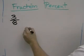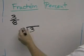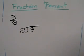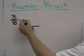3 eighths means 3 divided by 8. So the first thing we're going to do is take 3 eighths and turn it into a decimal.